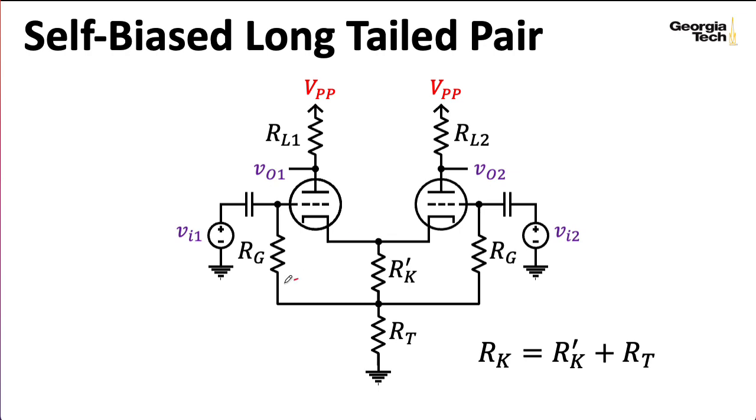We're generally going to assume that these grid leak resistors are the same. However, the load resistances here can be different and often are different. So we'll need to take into account. This is the same kind of notation that I used for the AC-coupled, self-biased cathodyne and cathode follower, where we're going to let RK equal this RK' plus this tail resistance RT. In this lecture, I want to focus on a small signal analysis. I'll address DC biasing in another lecture.